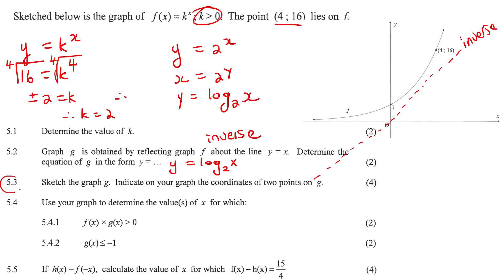This next question says sketch the graph of g. Graph g is obtained by reflecting, so graph g is this log graph that we just found. Indicate on your graph the coordinates of 2 points. Very easy.